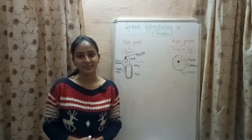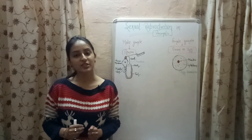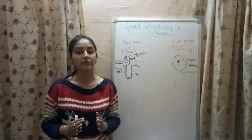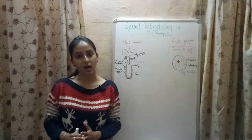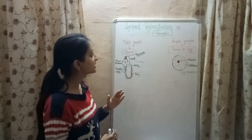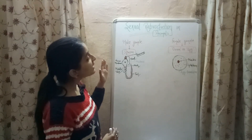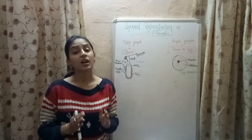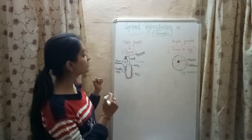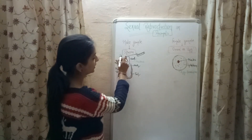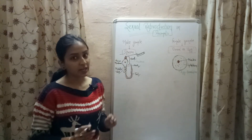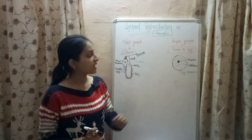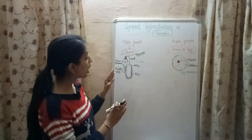Welcome to Biology at Ease. In my previous video I explained sexual reproduction in plants. Now in this video we will be discussing sexual reproduction in animals. The male gamete in animals is known as sperm, whereas the female gamete is known as ovum or egg.